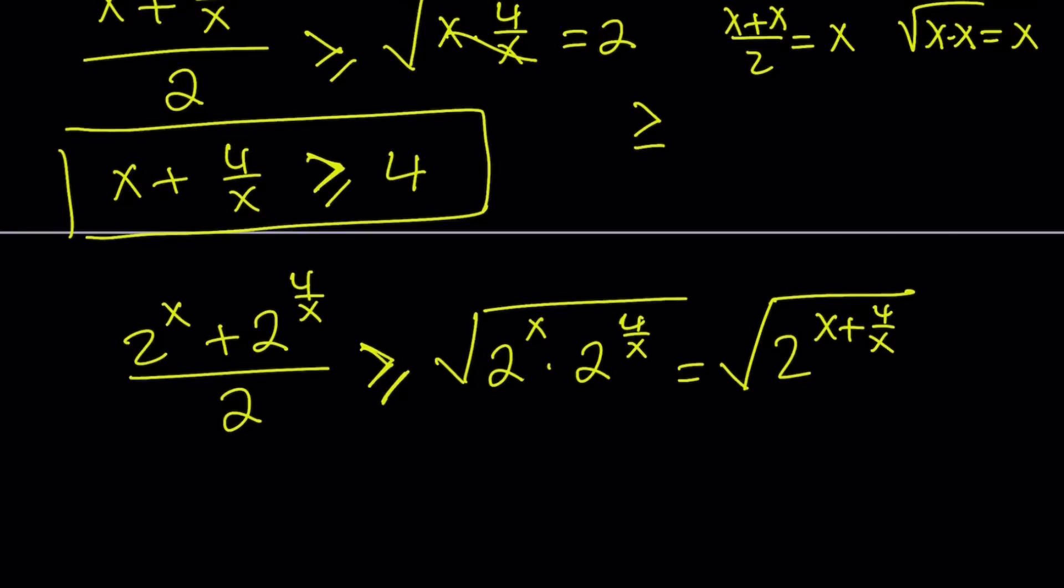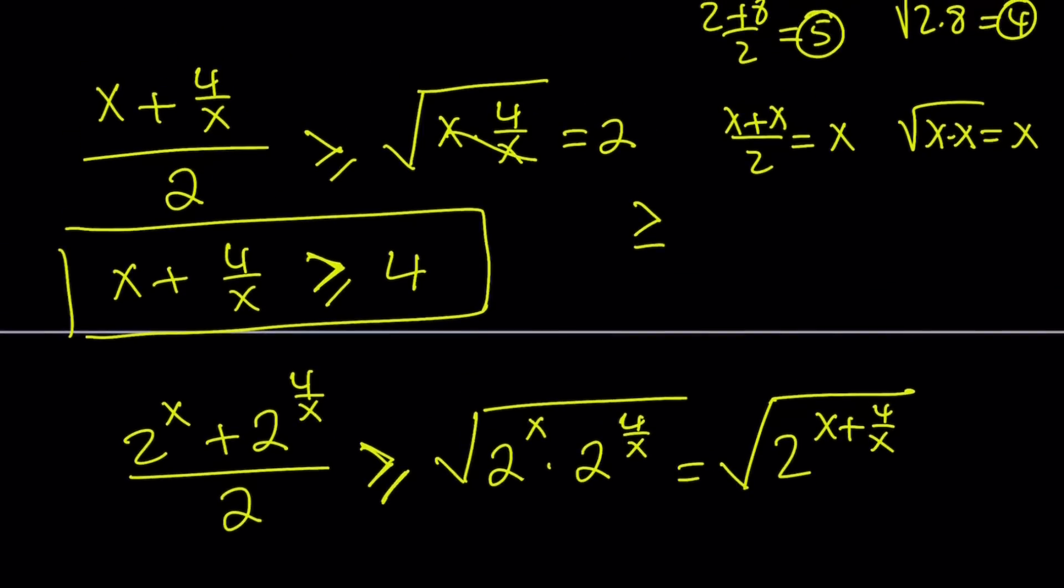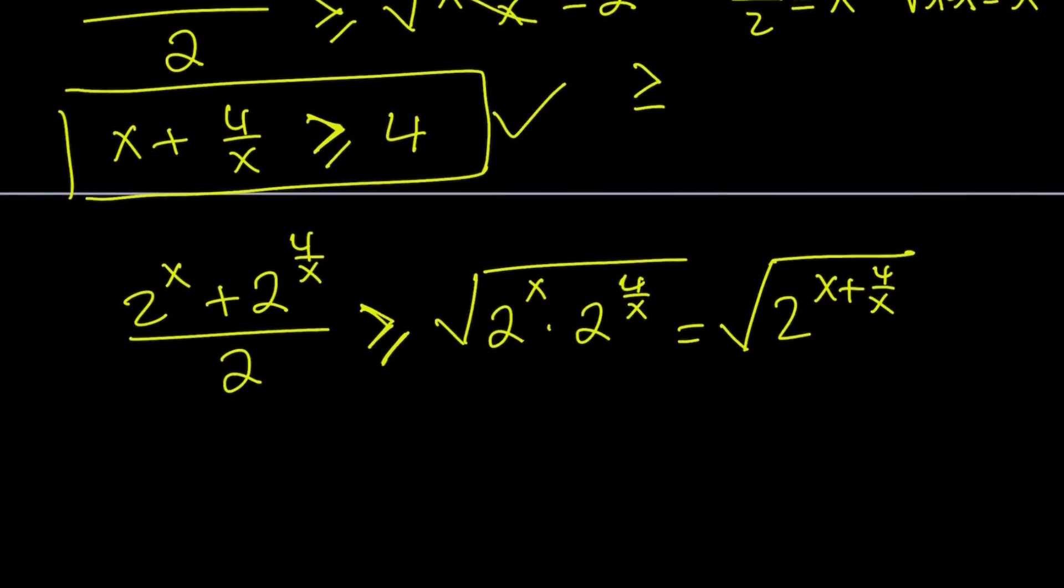So it's nice. We have the 2 to the power x plus 4 over x on the right-hand side, inside the radical, which is nice because we do have an inequality for the exponent. And on the left-hand side, we have 2 to the x plus 2 to the power 4 over x.